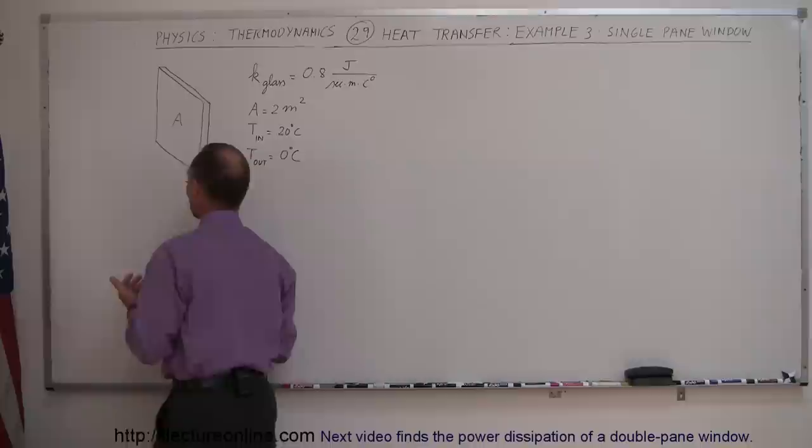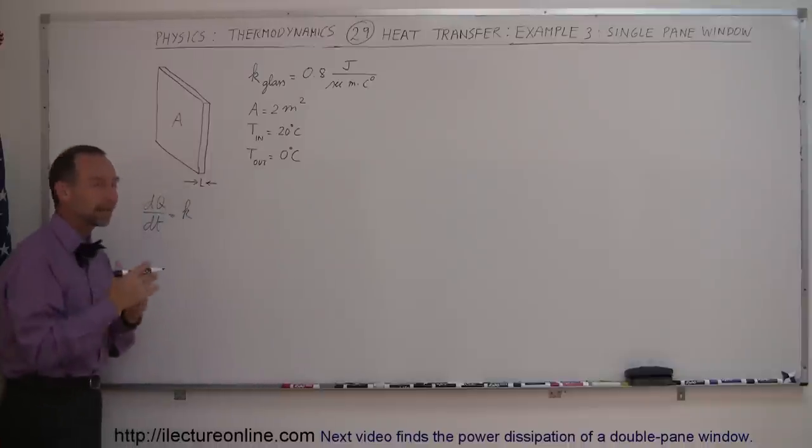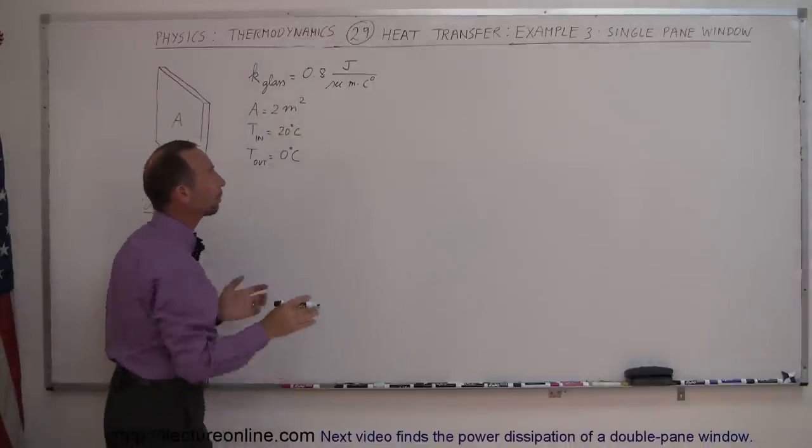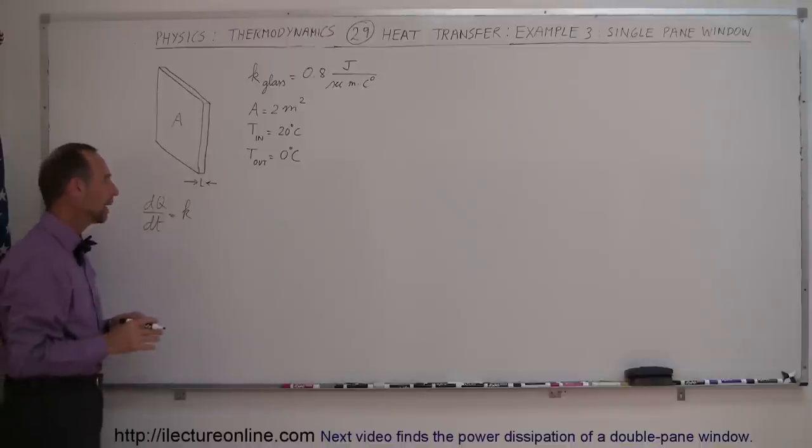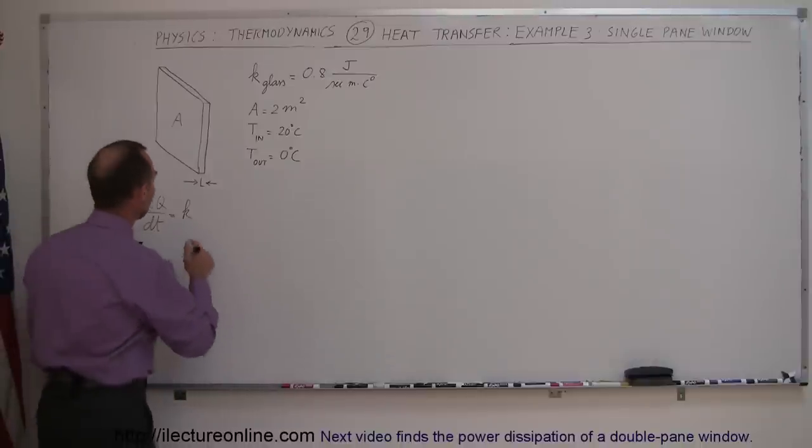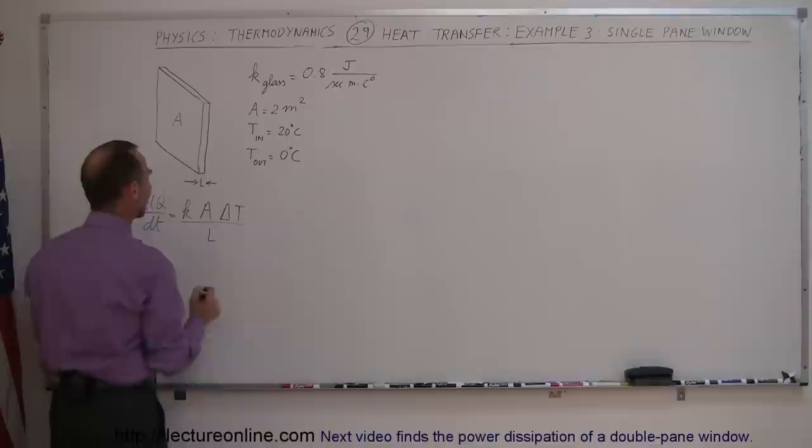The equation is dQ/dt, the amount of heat transfer per unit time, equals the coefficient of conductivity K times the cross-sectional area times the temperature difference, divided by the length of the path. For glass, K is 0.8 joules per second per meter per degree Celsius. Notice that for glass it's much smaller than for metal, which is good—not as much heat will transfer through glass.